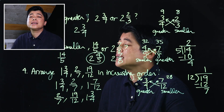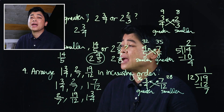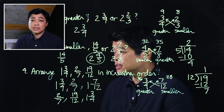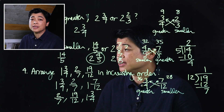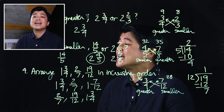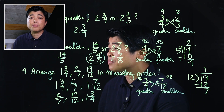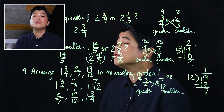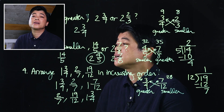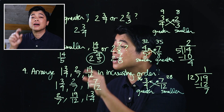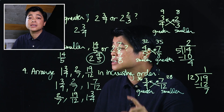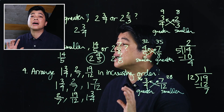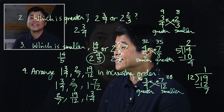When comparing fractions, improper fractions, and mixed numbers, it's important to change the improper fractions into mixed numbers because it's easier to compare the whole number parts. That concludes lesson four of chapter eight.